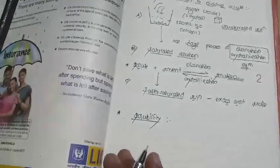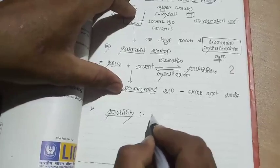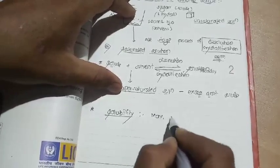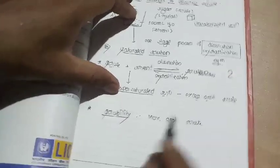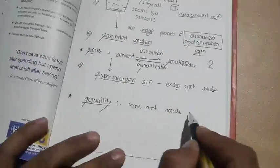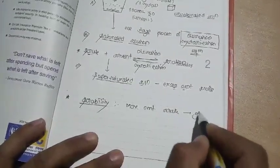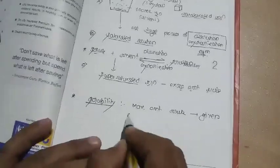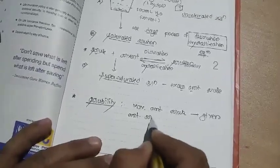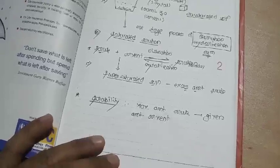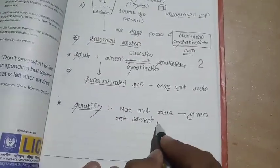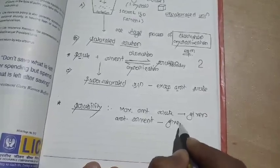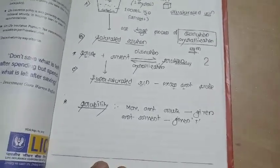Solubility is simply the maximum amount of solute that can be dissolved in a given amount of solvent at a given temperature, where temperature is kept constant. That maximum amount represents the solubility of that particular solute.